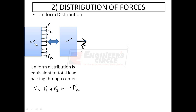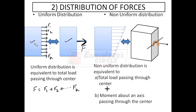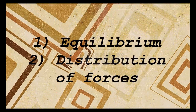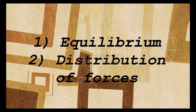The second type is non-uniform distribution of forces. The loads F1, F2 are not equal in magnitude. This non-uniform distribution is equivalent to two things: first, a total load F passing through the center, where F equals F1 plus F2 and so on, plus a moment M about an axis passing through the center. So to replace this distribution, apply load F at the center plus a moment M. These were the two basic concepts we will be using in our study of strength of materials.